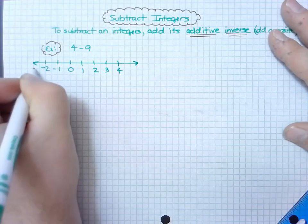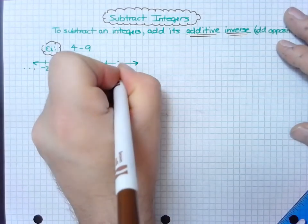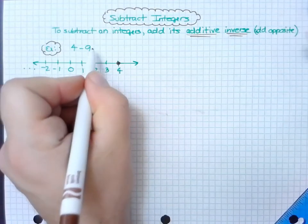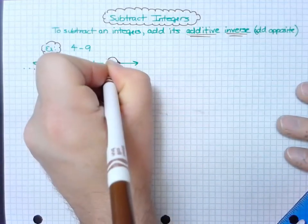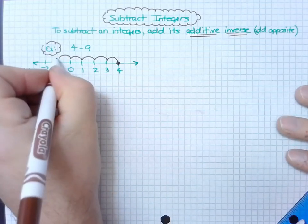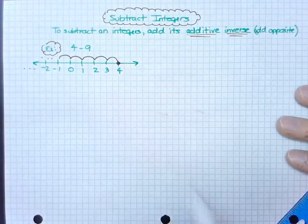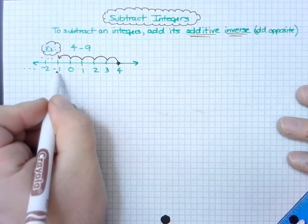All right, so if I have a 4 but I have to subtract 9 from it, which means I'm going to the left on the number line, then I go 1, 2, 3, 4, 5, etc. Notice how I'm already in the negative side of the number line, which means my answer is going to be negative.